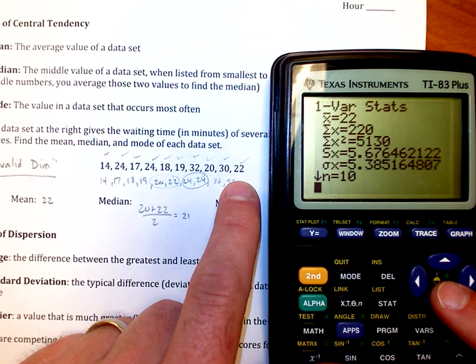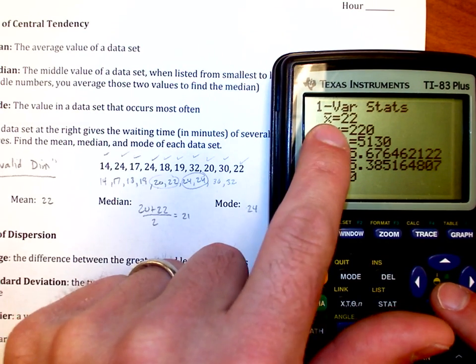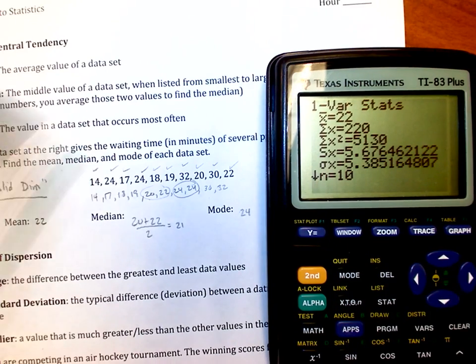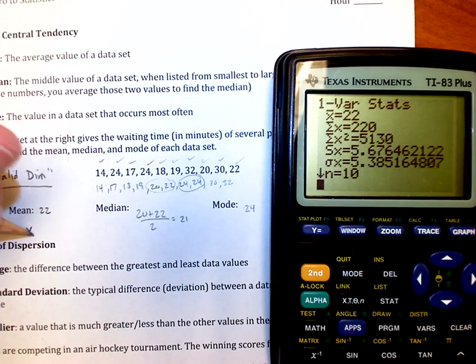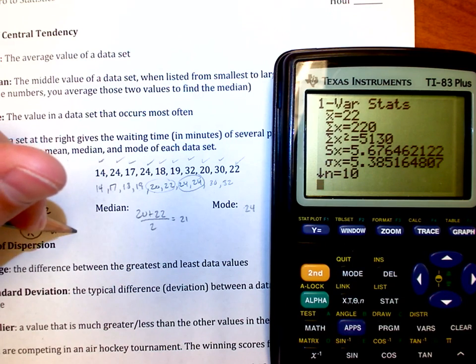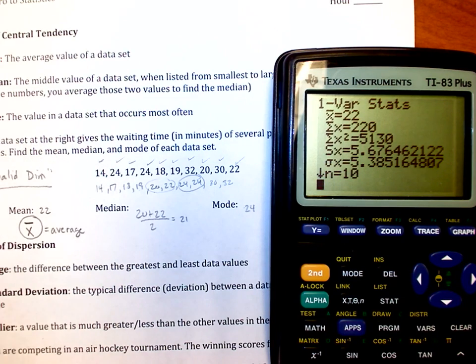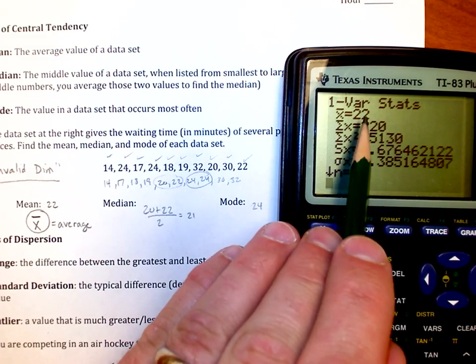It starts to tell me a bunch of interesting information. On the calculator, whenever you do this, anytime you see the bar over the top, that means the average value. This is the average value. The average value in this case is 22.